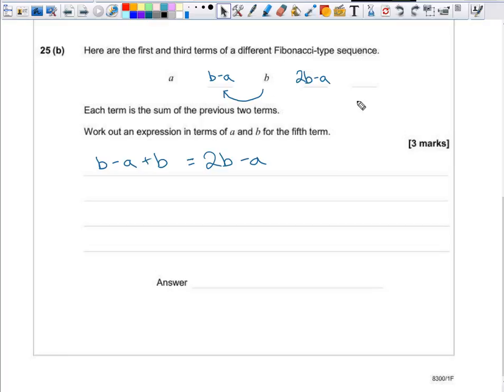We do this one more time to work out what the final step would be, in which case we've got these two terms added together. So I've got b add 2b subtract a. 2b add b is 3b subtract a. So that would give us 3b subtract a. That's the final term in that sequence.